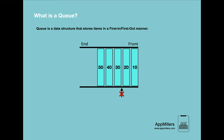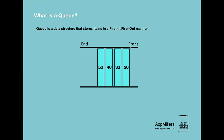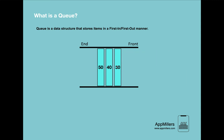When we want to take an element from the queue, the only option is to remove it from the beginning — the front of the queue. If we continue taking out elements, we again take from the front each time, until we reach the end.